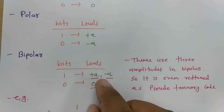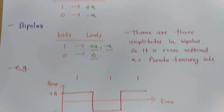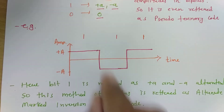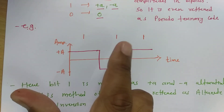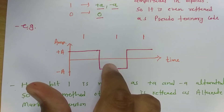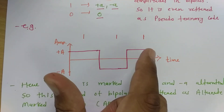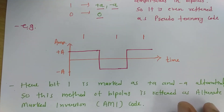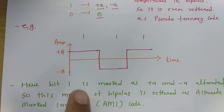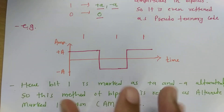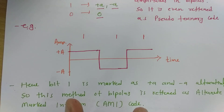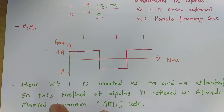In bipolar there are three different levels, so it is referred to as pseudo ternary code. Bit 1 is assigned plus A and minus A voltage alternatively — if the first 1 is assigned plus A, the next 1 gets minus A, and the one after gets plus A again. Therefore, bipolar needs one bit of memory to remember the voltage of the previous 1 so it can correctly assign the voltage to the next 1.